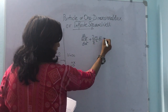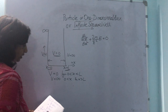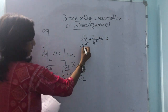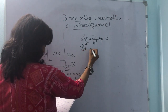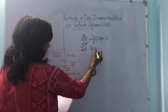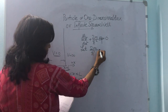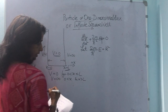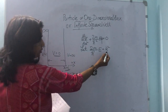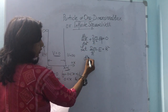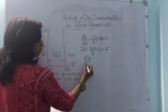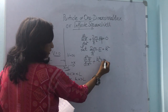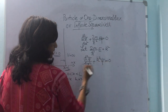So we write the equation with E·φ equal to 0. We assume a constant: 2m upon ħ² into E is equal to k². Substituting this, the equation becomes d²φ/dx² plus k²φ equal to 0. We do this to express the equation in standard differential form.